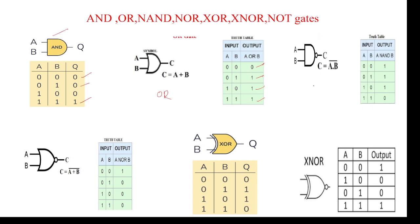For the NAND gate: 0·0=0, bar means 1; 0·1=0, bar means 1; 1·0=0, bar means 1; 1·1=1. Next is the NOR gate.